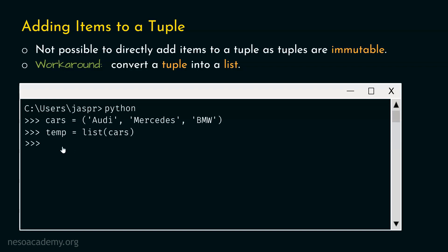Now let's say we want to add a new item Toyota to the list temp. For this, we will use the append() method. We know there is a method called append, which allows us to add items to a list. Let's type: temp.append('Toyota'). We just need to pass the item we want to add, and the rest of the job will be done behind the scenes. Let's hit enter and check our list.